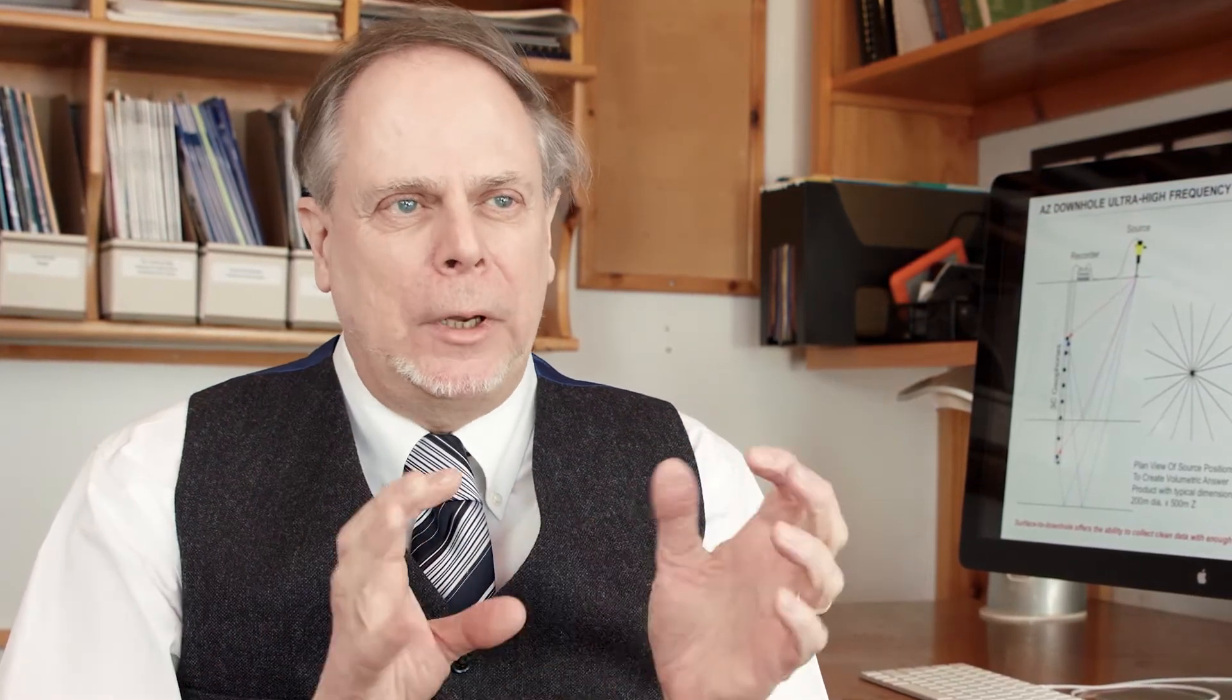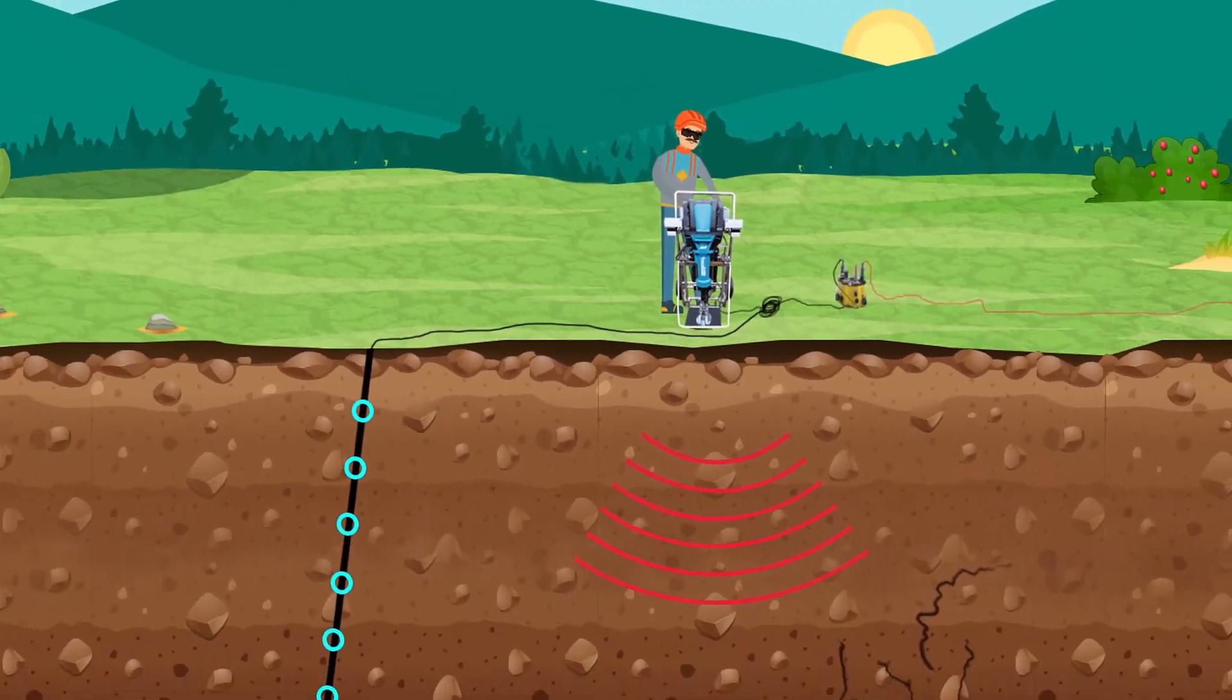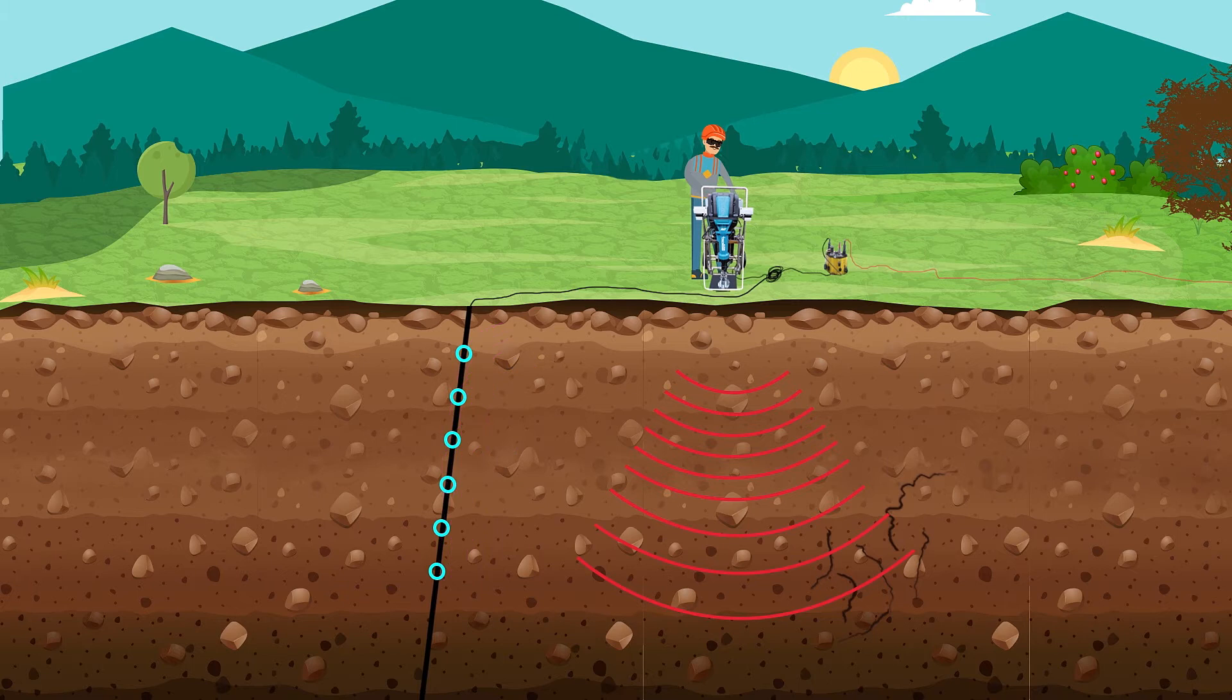So what we decided is to image around the drill hole and provide very dense imagery, creating an acoustic core product that's 200 meters in diameter. We're able, through beams of sound, to build up an image that wasn't able to be constructed with current seismic techniques.